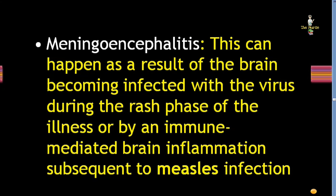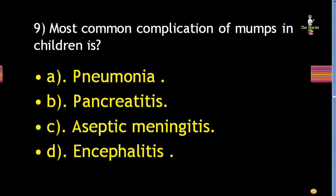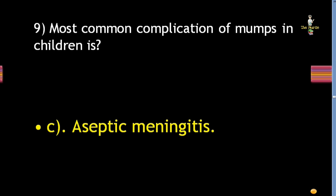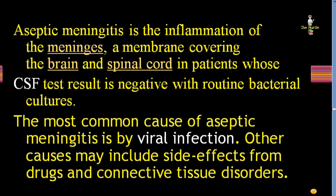Next question: most common complication of mumps in children is pneumonia, pancreatitis, aseptic meningitis, or encephalitis? Correct answer is aseptic meningitis. Aseptic meningitis is inflammation of the meninges — the membrane covering the brain and spinal cord — in patients whose CSF test result is negative with routine bacterial cultures. The most common cause is viral infection; other causes include drug side effects and connective tissue disorders.